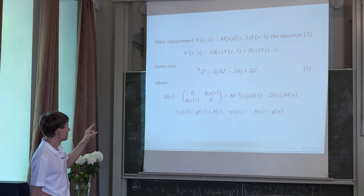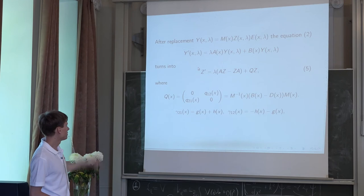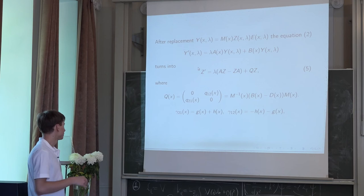And matrix Q is skew diagonal. You can see it here. And we also have some notation for gammas.